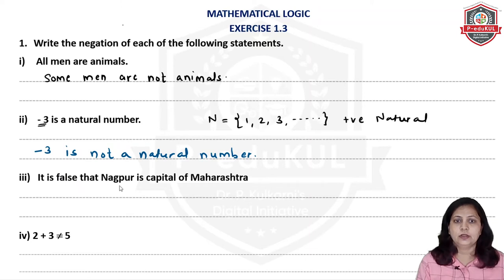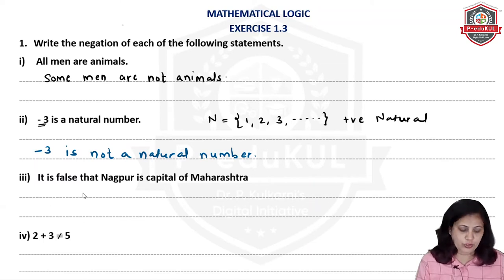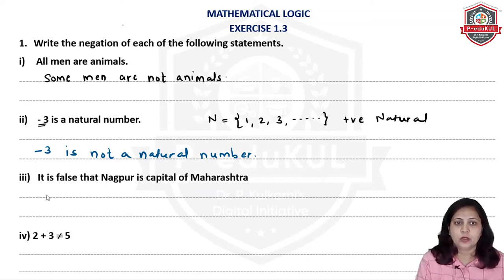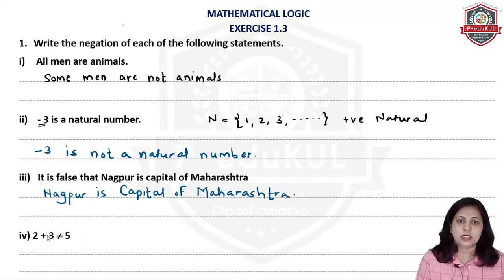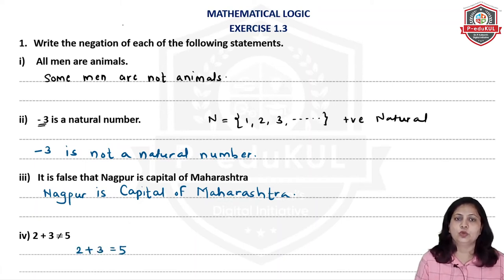Next: 'It is false that Nagpur is the capital of Maharashtra.' The truth value is F. For the negation, we remove the prefix 'it is false that' and write: 'Nagpur is the capital of Maharashtra.' Then, for '2 + 3 ≠ 5', negation means the exact opposite, so we write: '2 + 3 = 5.'